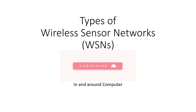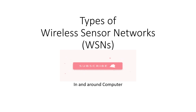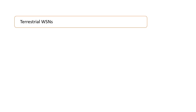In this video, we are going to see the types of wireless sensor networks. Depending upon the type of environment, we can classify the WSNs into five different categories.